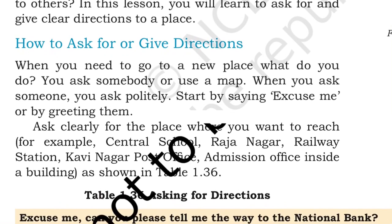Ask clearly for the place where you want to reach. आप जहाँ पर जाना चाहते हो उसके बारे में clearly पूछना है। For example, आपको जाना है Central School, Raja Nagar, Railway Station, Kavi Nagar, Post Office, Admission Office, या Inside a Building — इन में से किसी भी जगह पर जाना हो, तो आप कैसे directions लोगे?